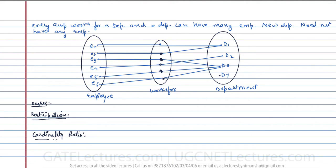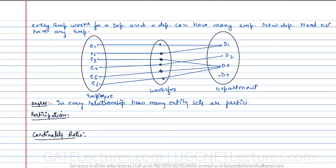The degree is: in every relationship, how many entity sets are participating — that is called the degree of a relationship. Here, how many entity sets are participating? We have two entity sets: number one is employee, and number two is department. Therefore, the degree of this relation 'works for' is 2.